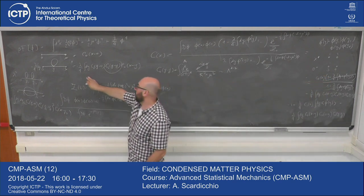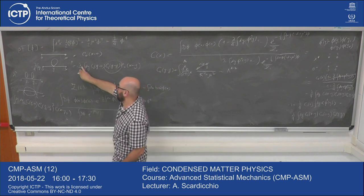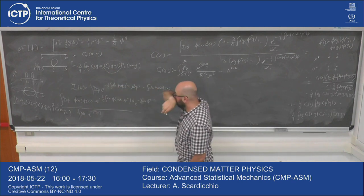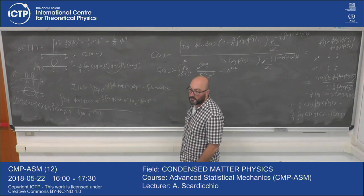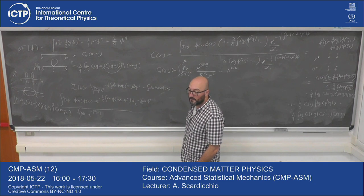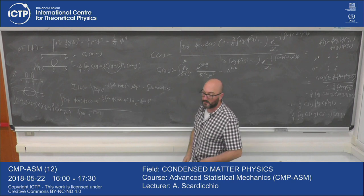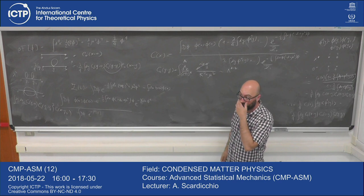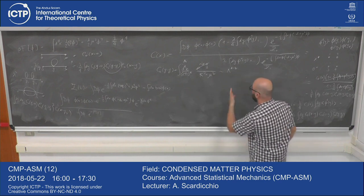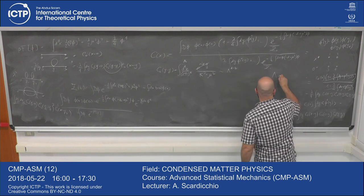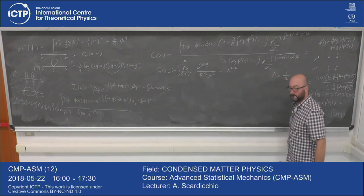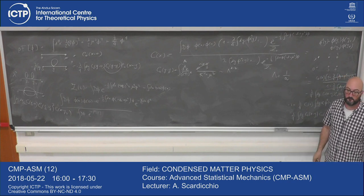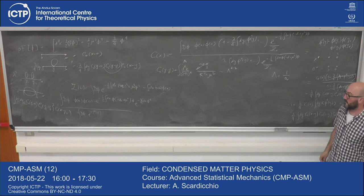We have a problem. We said this was a small perturbation and did perturbation theory because lambda was small. But we find that this loop term is actually infinite if we take the cutoff going to infinity — or large, since capital lambda is the inverse of the lattice spacing and we want to take the limit where the lattice spacing goes to zero.